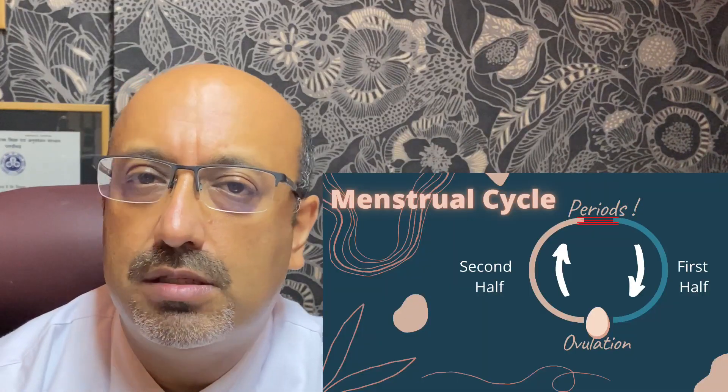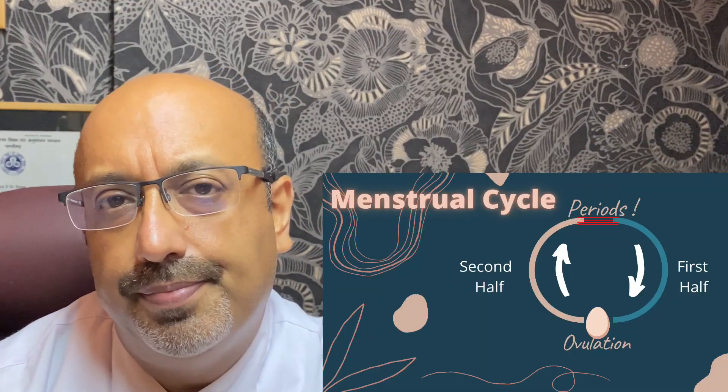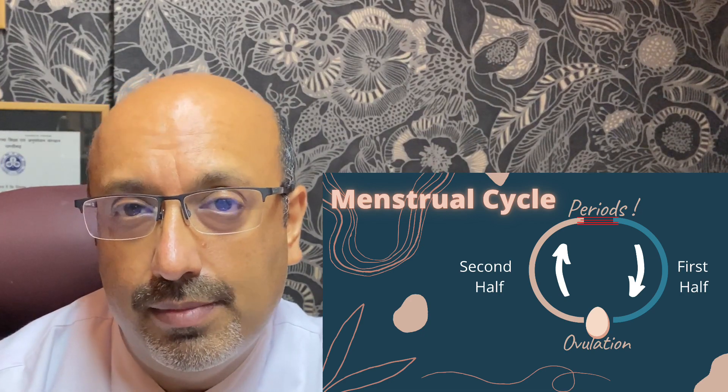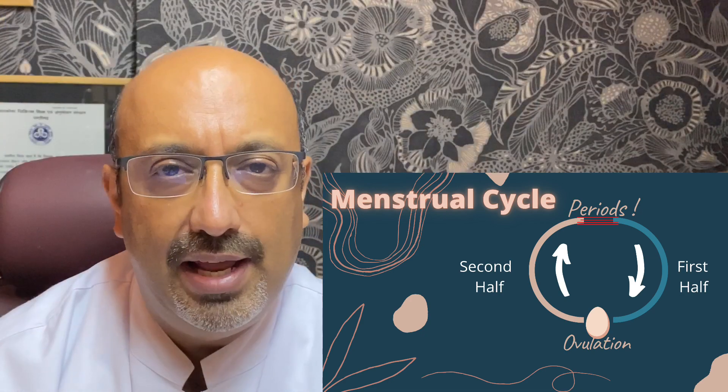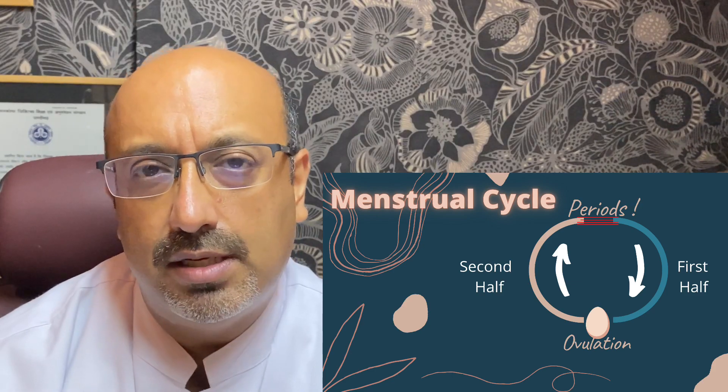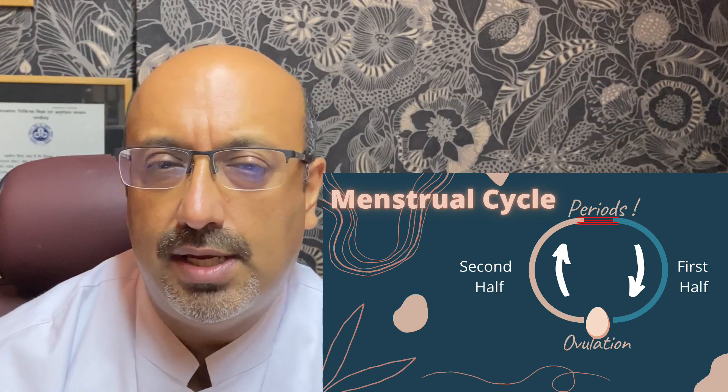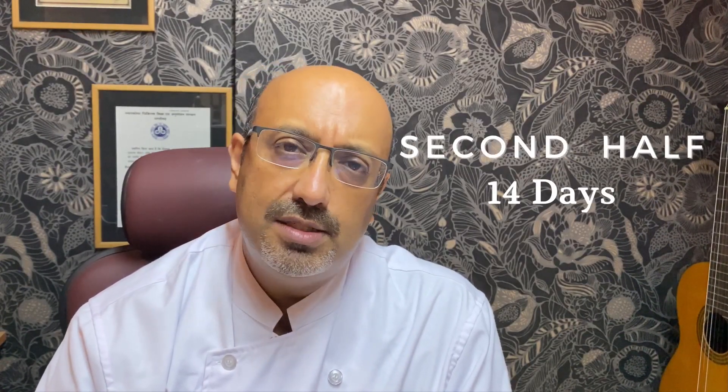A cycle is essentially a circle. It starts on the first day of your period and ends on the first day of your next period. On average, you'd expect a menstrual cycle to be about 28 days. We divide these 28 days into two: a 14-day first half and another 14-day second half.